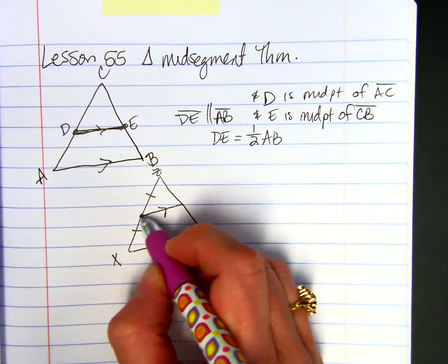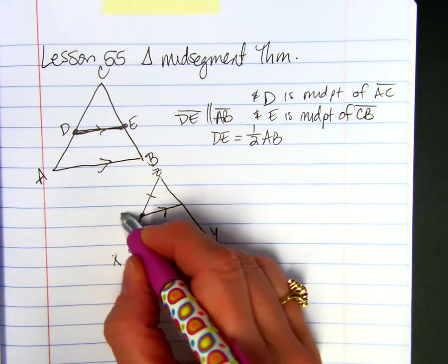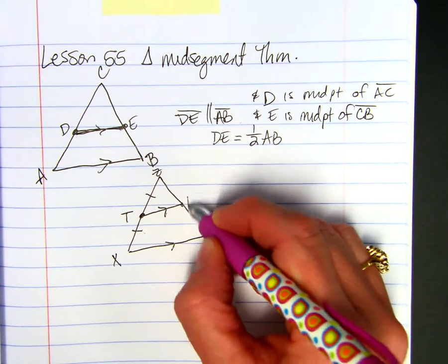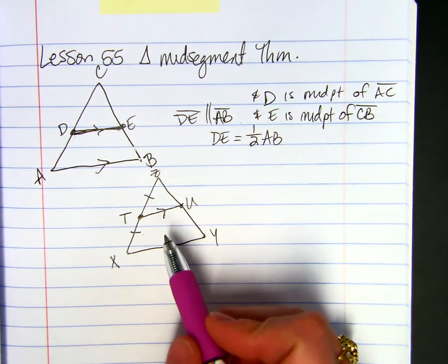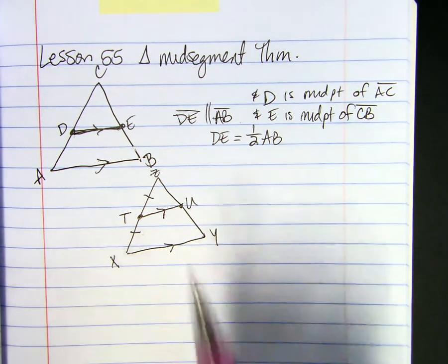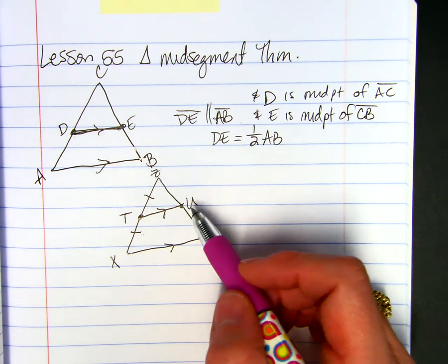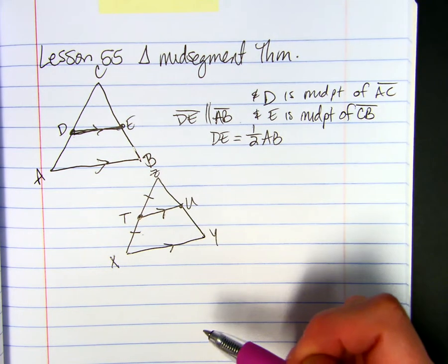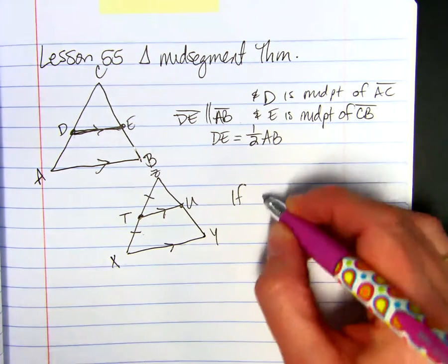So since these two are congruent, this will be the midpoint. If it's parallel to the third side and contains the midpoint, then it contains the midpoint of the third side.